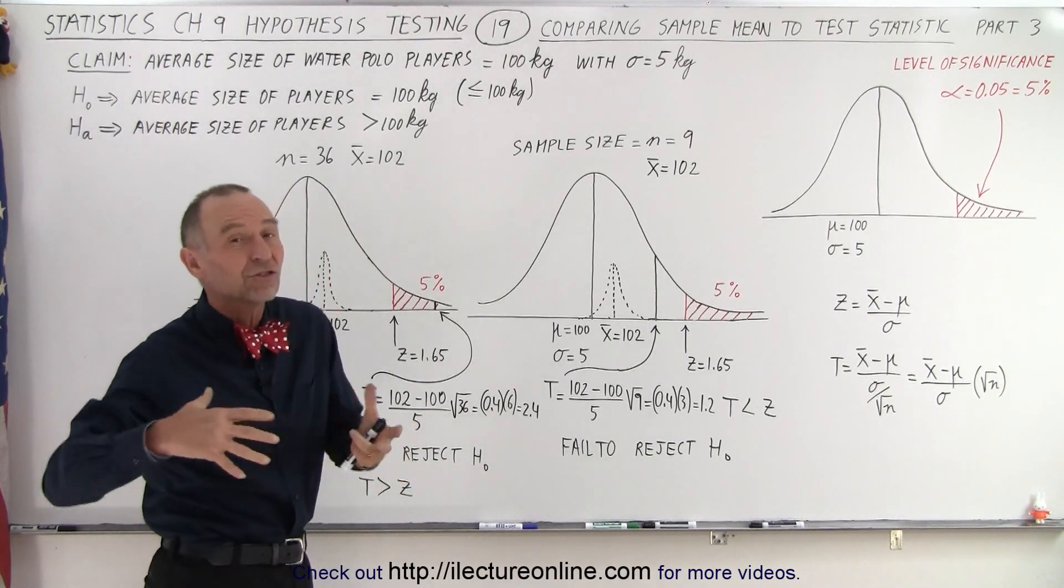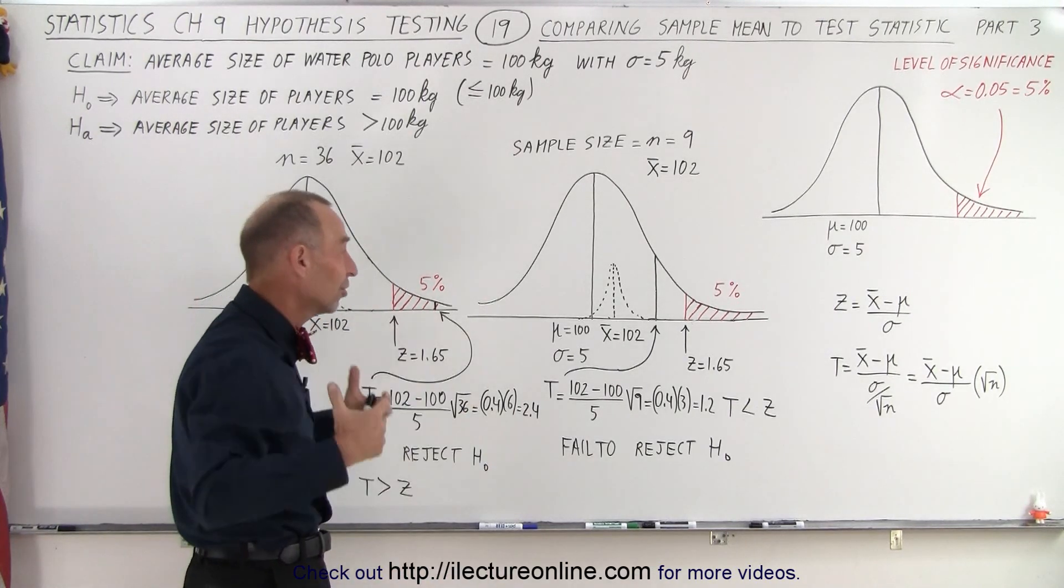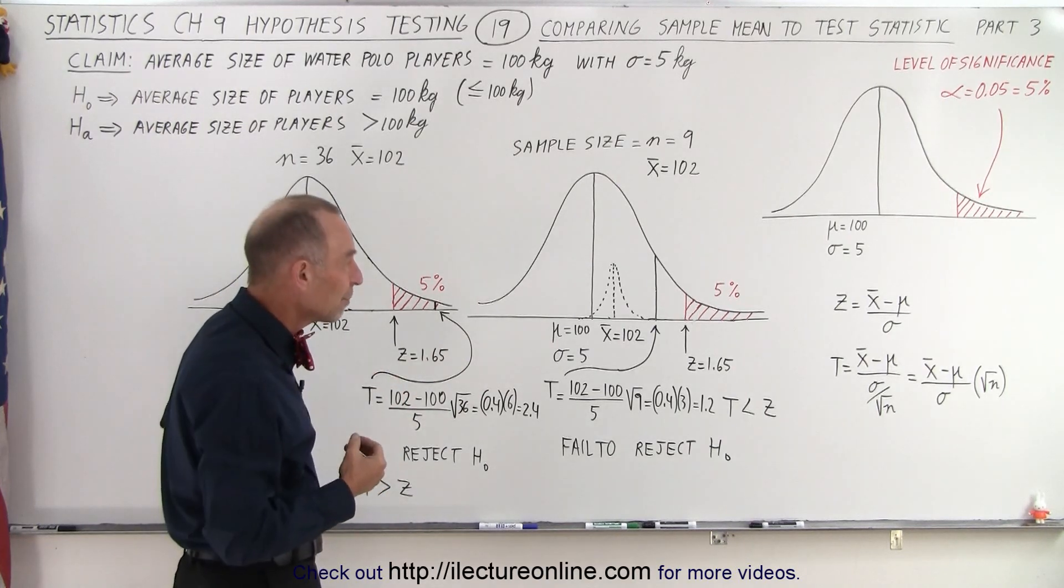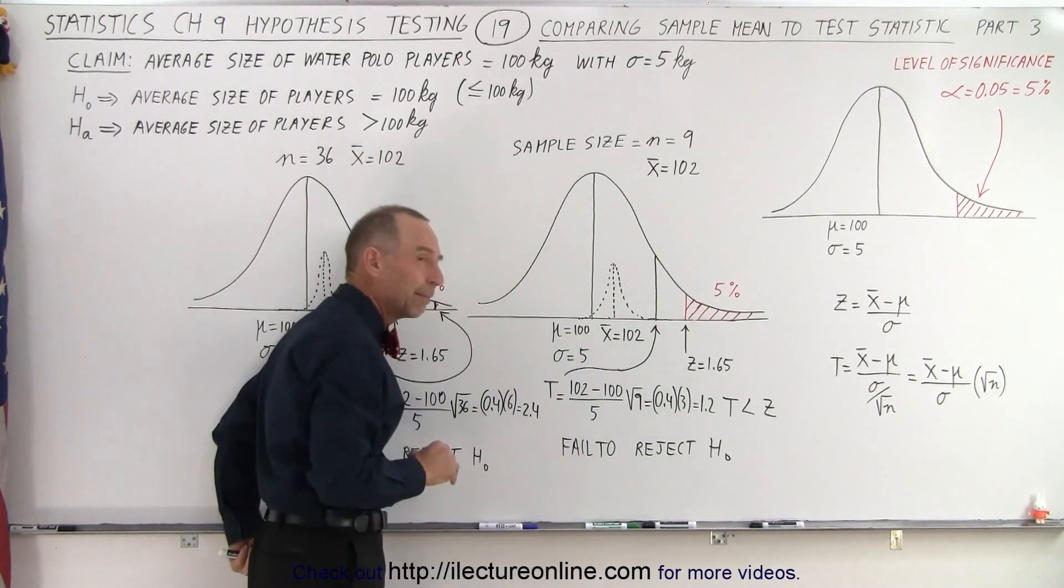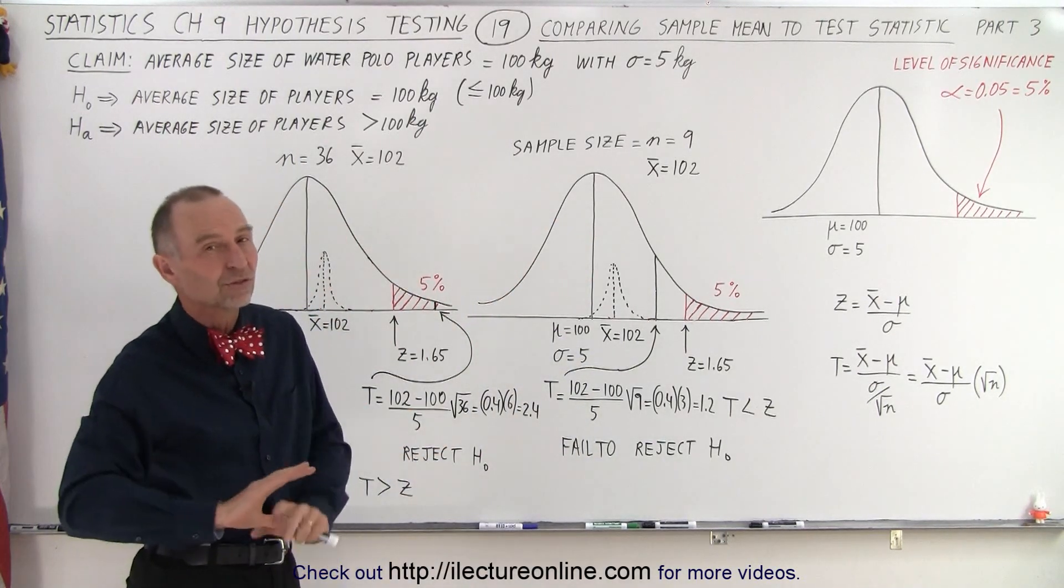In other words, you need a larger sample size. You need more players, a larger sample size of random players that you picked in order to begin to claim that you can reject the null hypothesis. So 9 in this case was not enough.